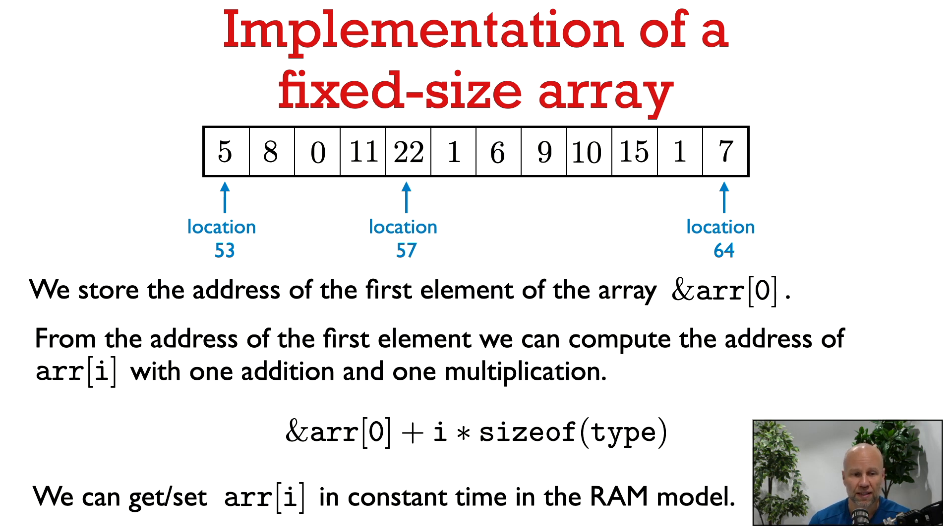To implement the get and set operations, we're going to store the address of the first element of the array. So in this example, the address of the first element of the array is 53. From the address of the first element of the array, we can find the address of any other element in the array.